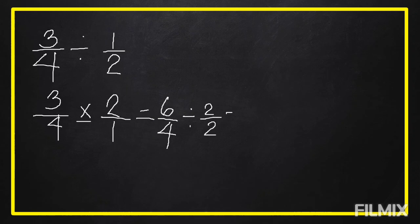Six divided by two equals three. Four divided by two equals two. So we get three over two. Three over two is an improper fraction. To reduce an improper fraction to lowest terms, we divide the numerator by the denominator. Three divided by two: the answer is equal to one.